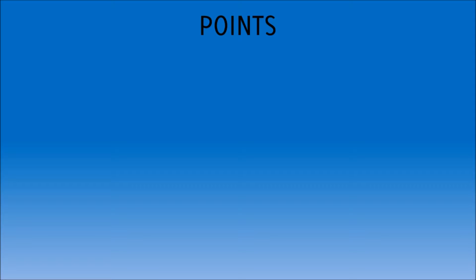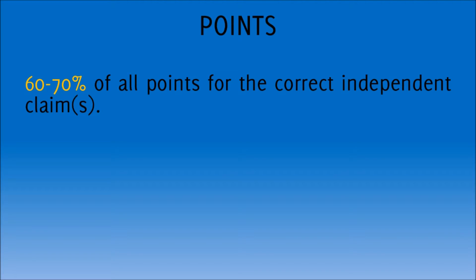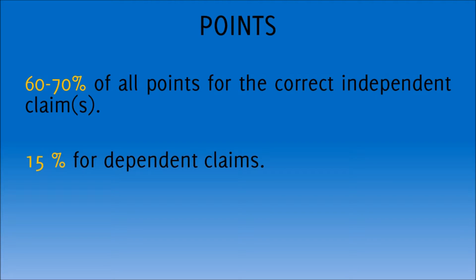Important for you to know right from the start is that Paper A is all about the claims. 60 to 70% are awarded for just the correct independent claims, of which there are normally like 2 to 3, and another 15% is awarded for the dependent claims. So you can already see that you gain easily 85% of the points by just handing in the perfect claim set. And even if it's not really perfect, it's very likely if you have a good claim set that you have already passed Part A just by those few papers you're handing in.